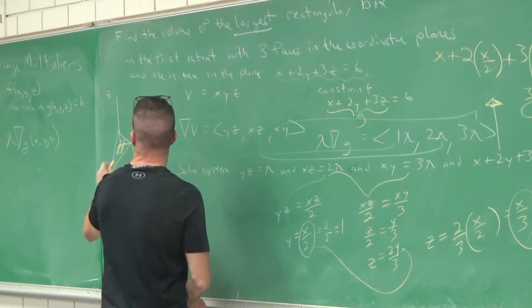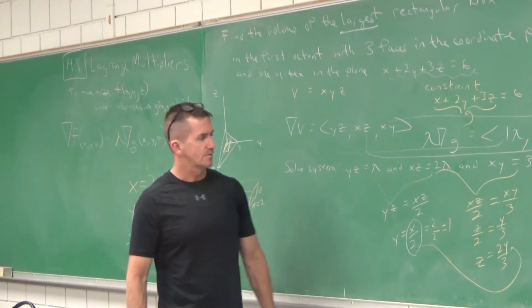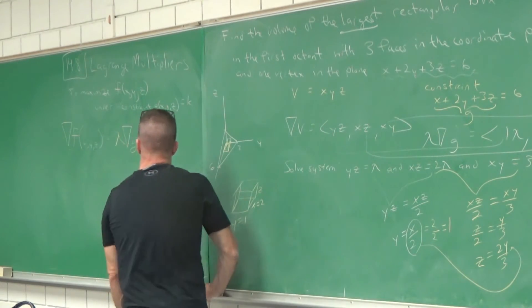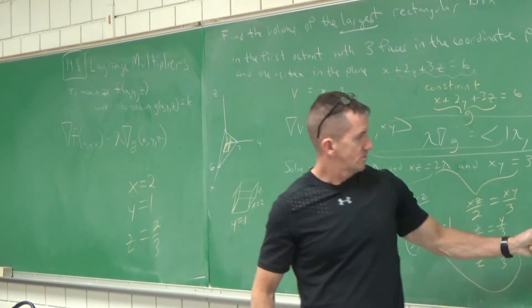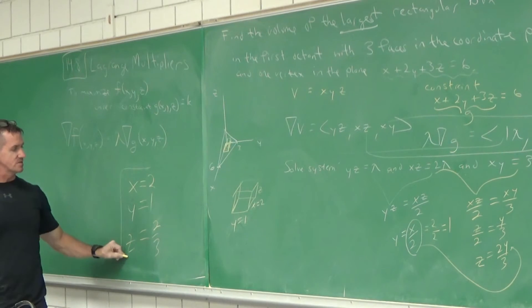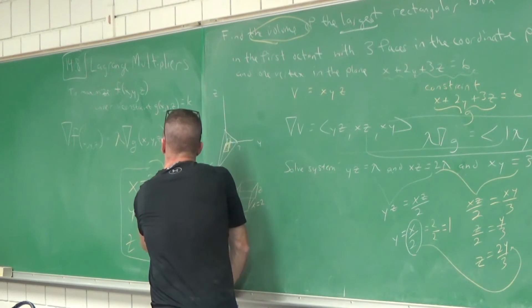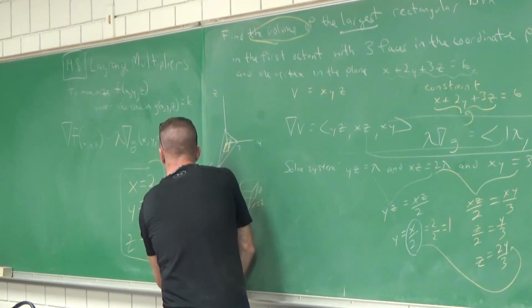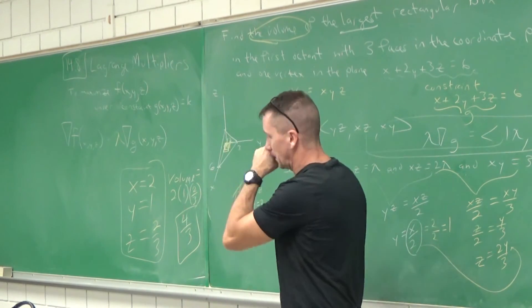So Y equals one. And Z equals X over three, which is two over three — two thirds. These are the dimensions of the box. The maximum volume is X times Y times Z: two times one times two-thirds gives four-thirds. That's the maximum volume of the box in that constraint, where the corner hits the plane X plus 2Y plus 3Z equals six.